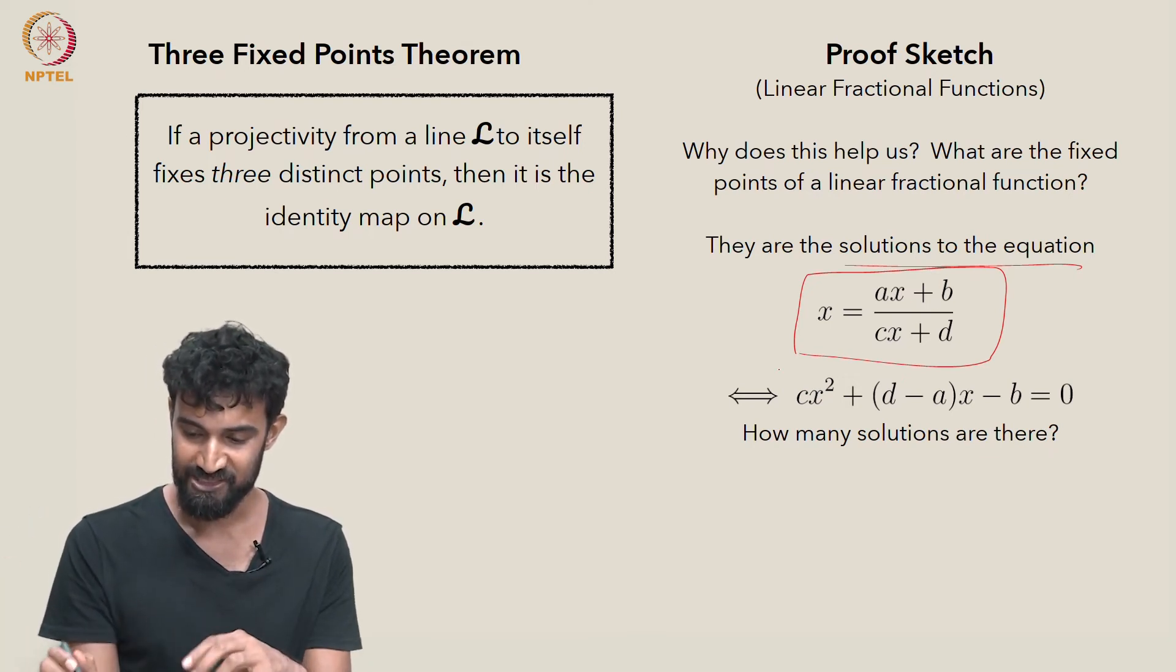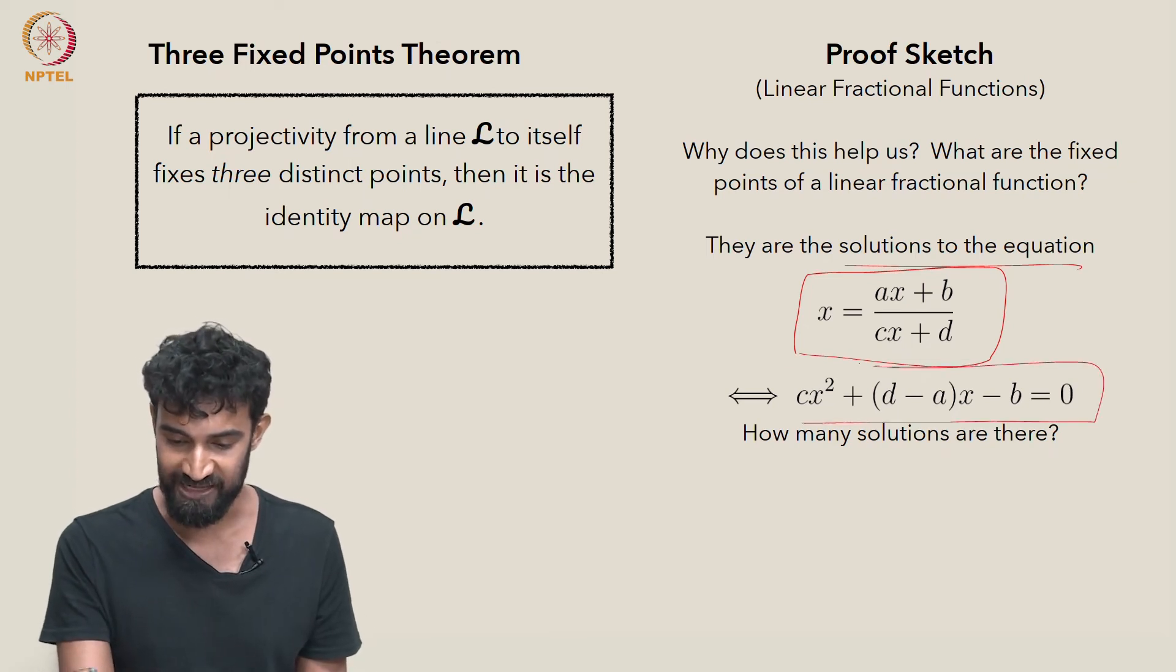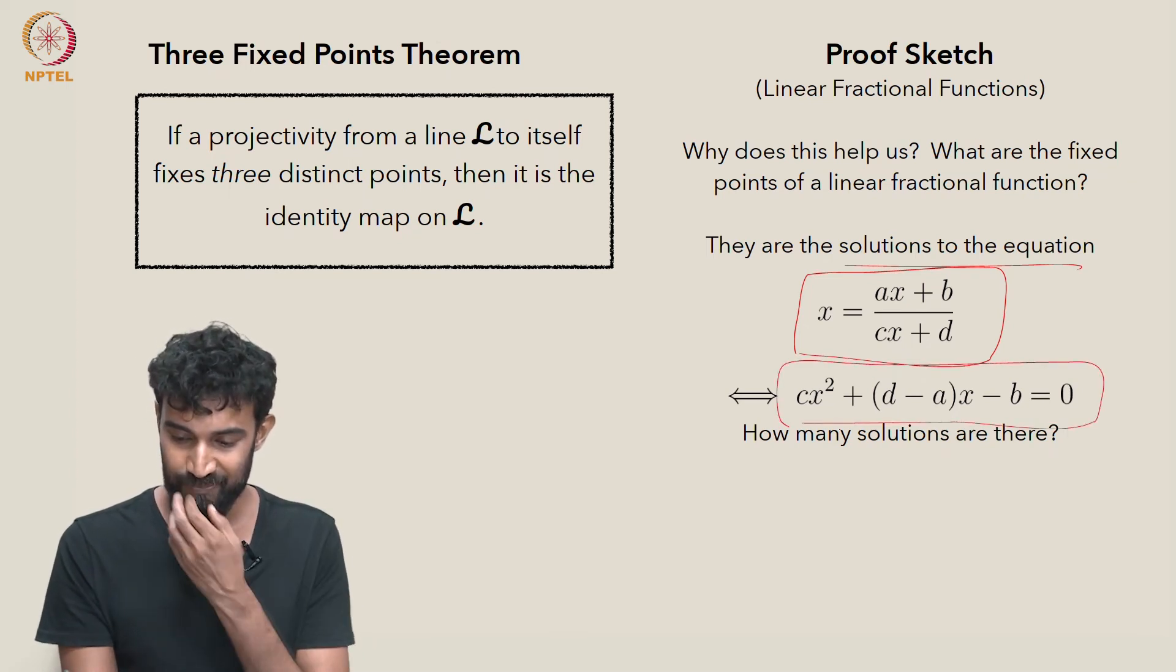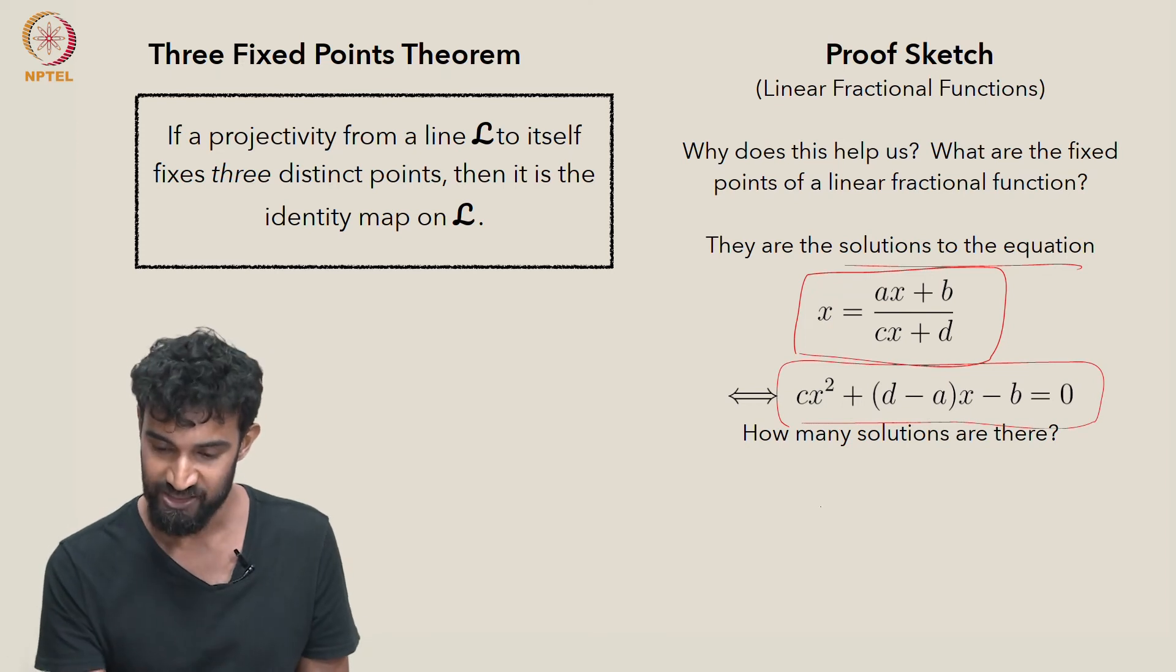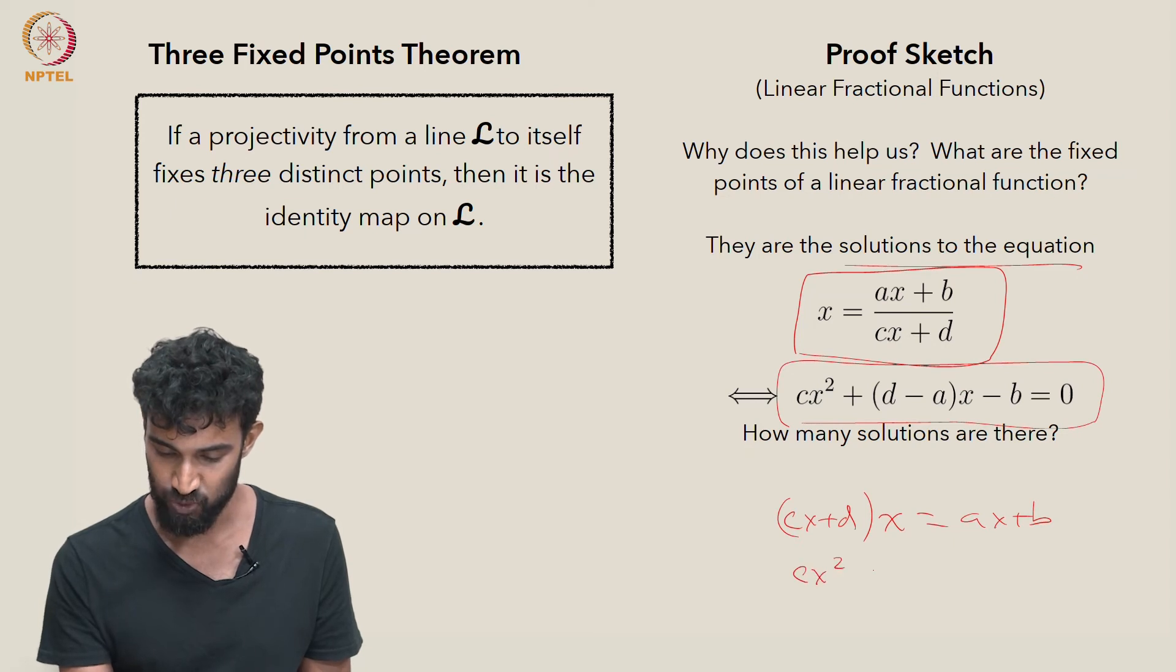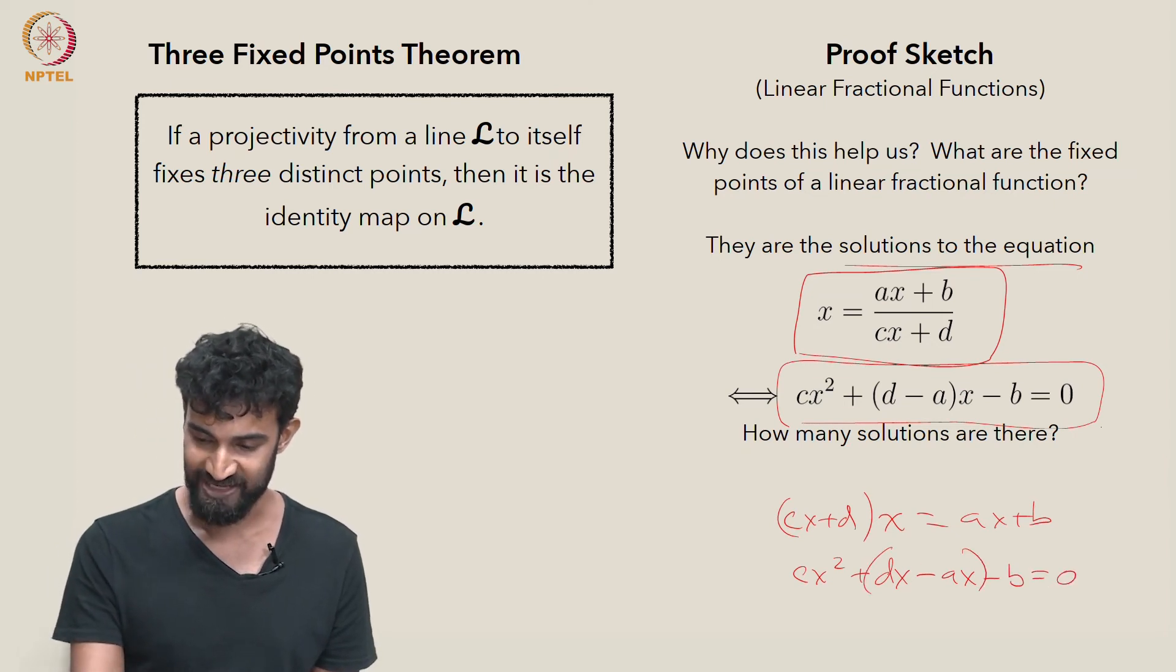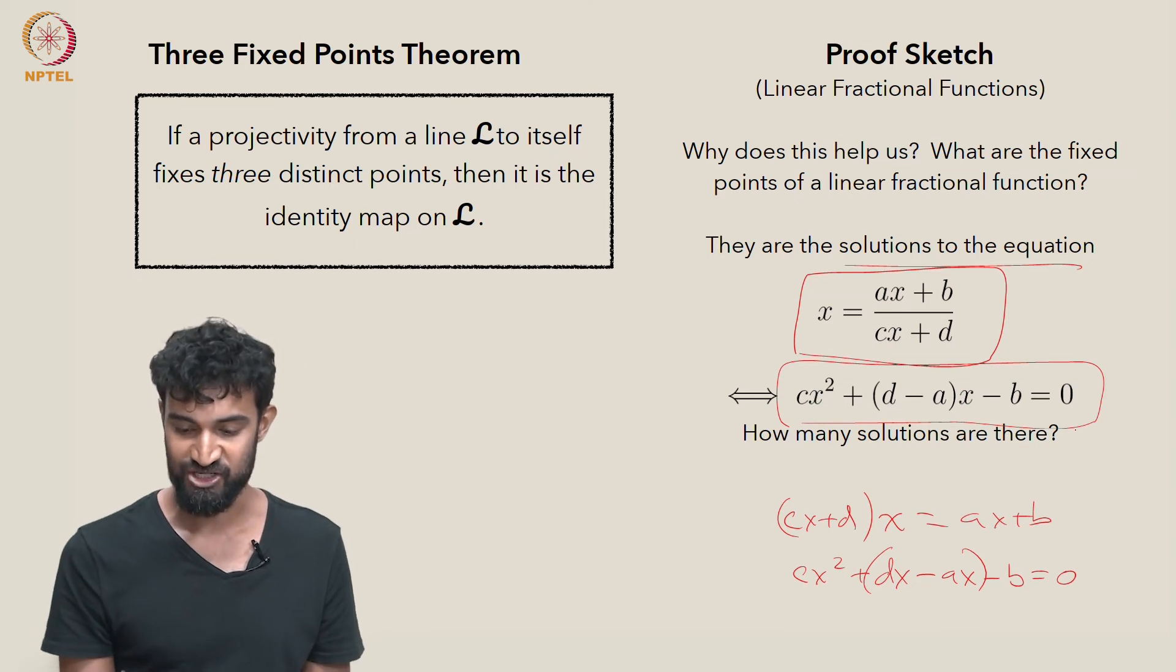But if we expand, if we multiply this out and group everything on one side of the equation, we get cx + d times x equals ax + b. Multiplying that out, we get cx² + dx - ax - b equals 0. And grouping these terms, we get exactly this expression.